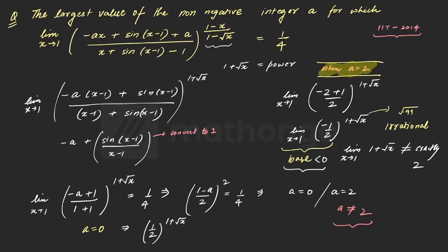The problem here was when the base was going to be negative. Remember, so when the base is negative in the exponential form, you have to be very careful with the limit. And this I suppose was one of the very good learnings that we can derive from this.